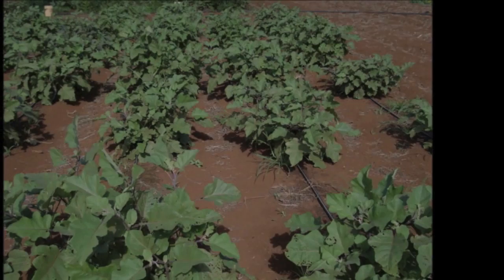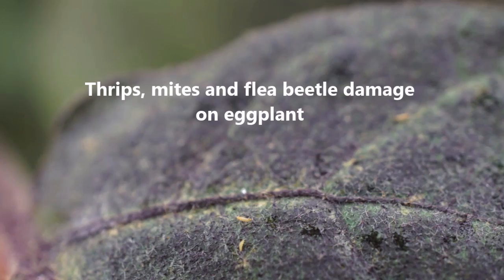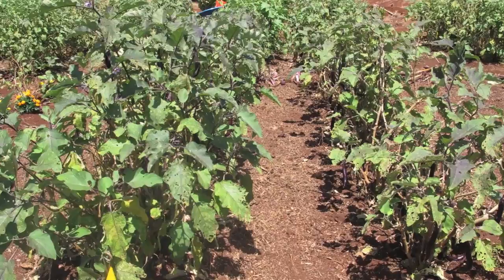During the summer months in Hawaii, thrips, mites, and flea beetles can cause severe damage on monoculture eggplant systems. High populations can cause defoliation and wilting.